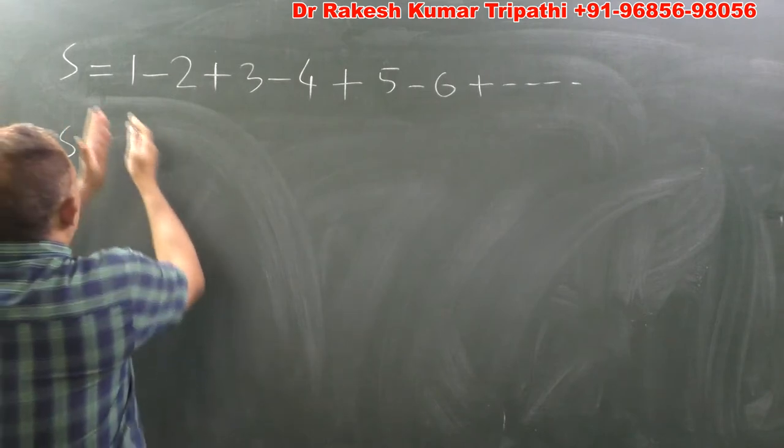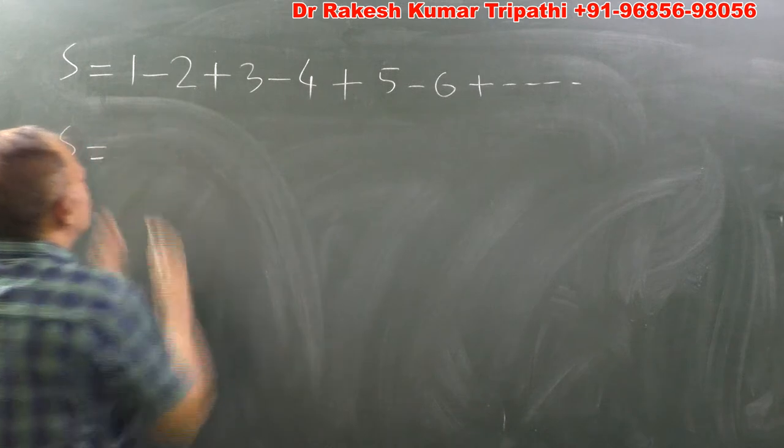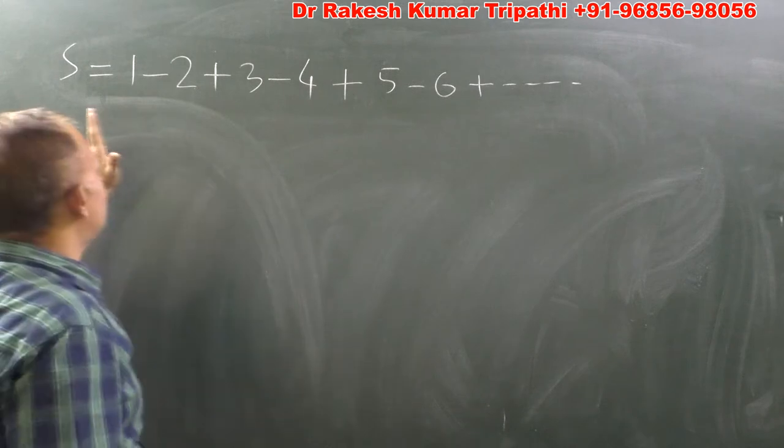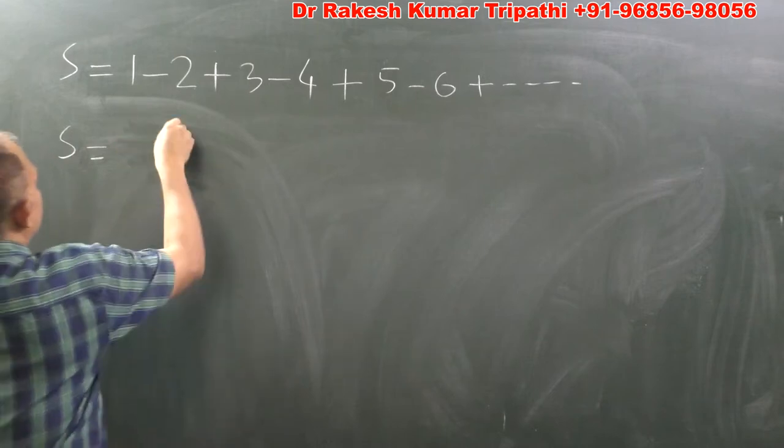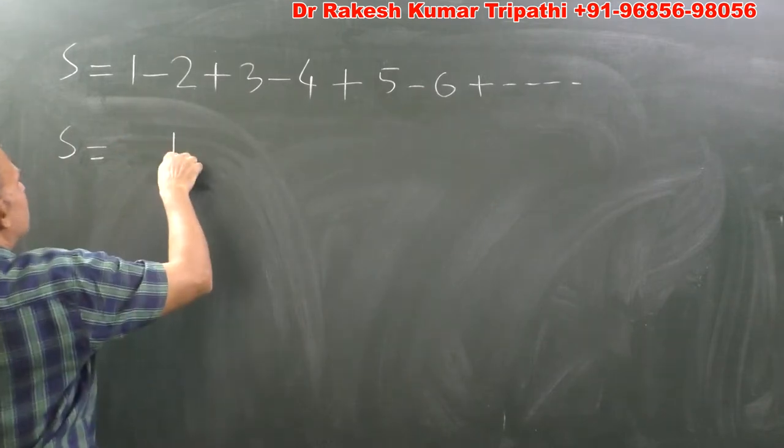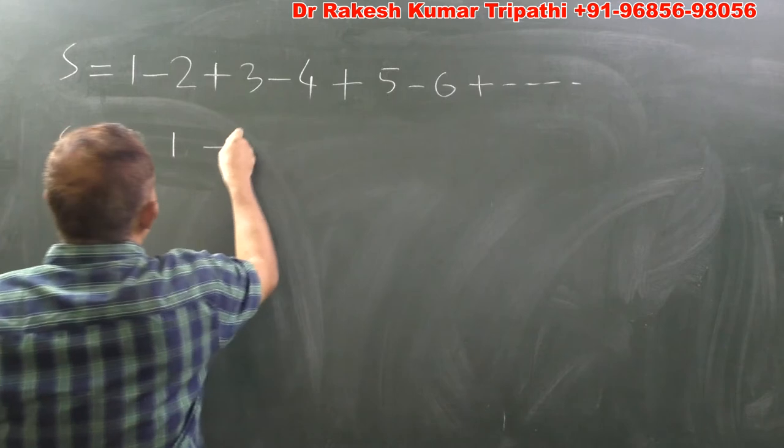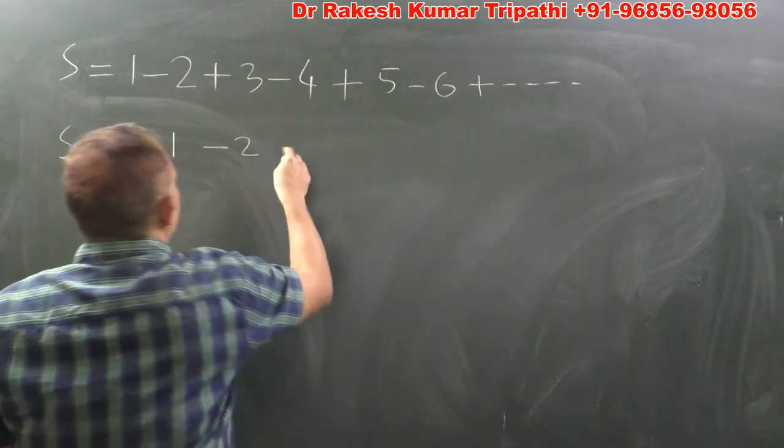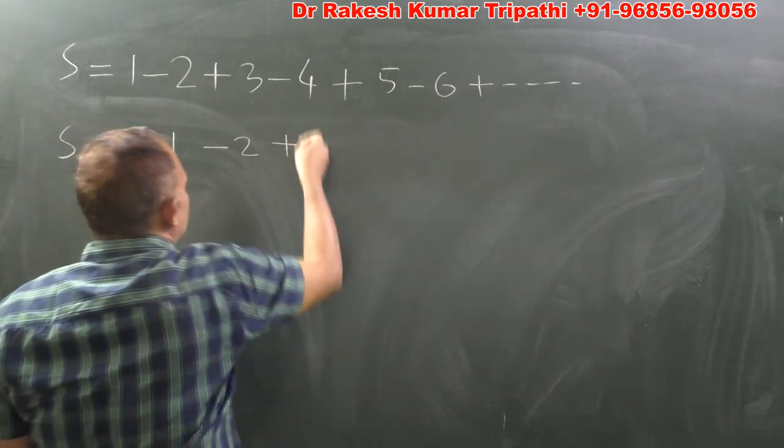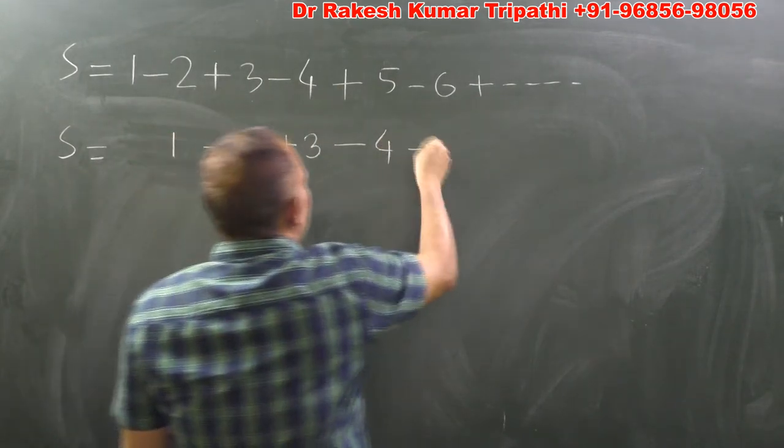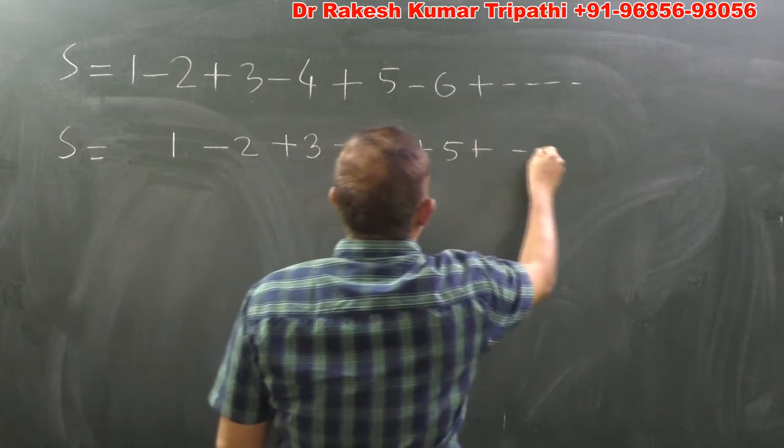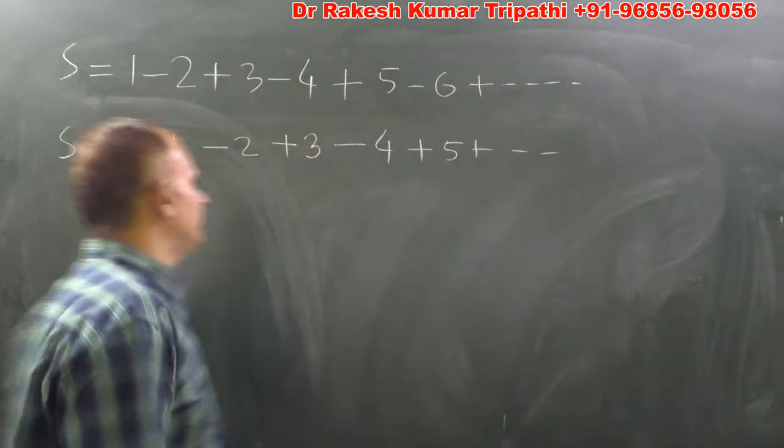Transfer this 1 below the minus 2, meaning shift a term of this series. So on shifting, this 1 will appear here, minus 2 will appear below this 3, plus 3 will appear below this and minus 4 will appear here, and likewise the procedure will go up to infinity.